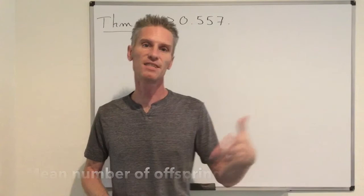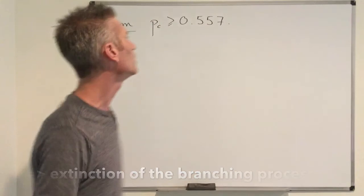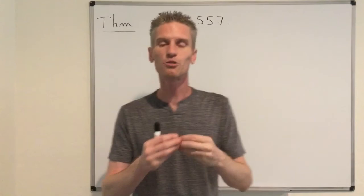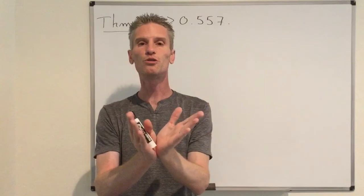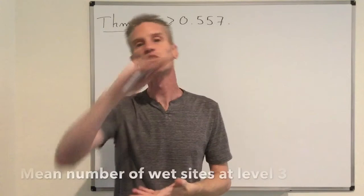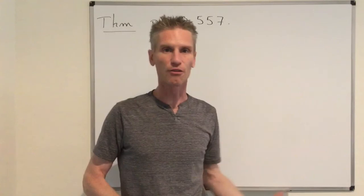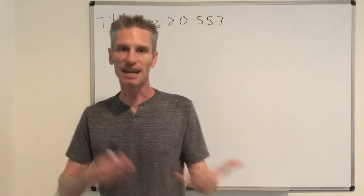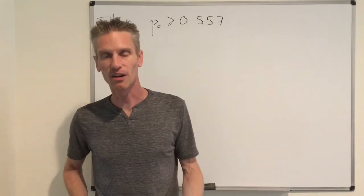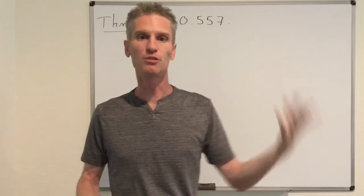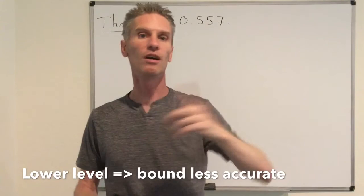The idea is to start with only one wet site at zero, look at the cluster growing from zero, and examine the total number of wet sites at level three. If we can prove that on average the number of wet sites at level three is strictly less than one, then by comparison with Galton-Watson branching processes there cannot be percolation. That's what gives us the result. Why level three? Choosing a lower level gives a worse bound, while choosing level four makes the calculation very messy, so three is the right balance.